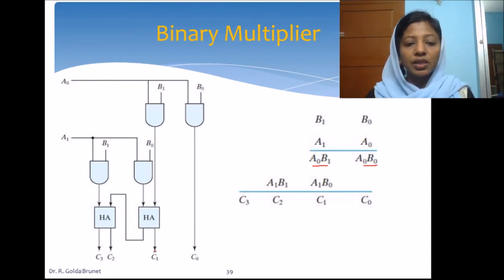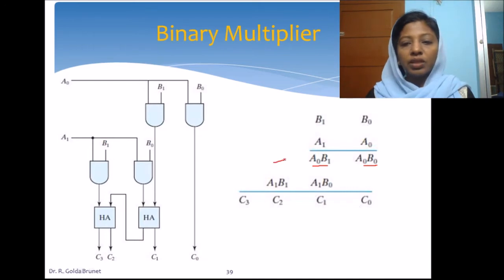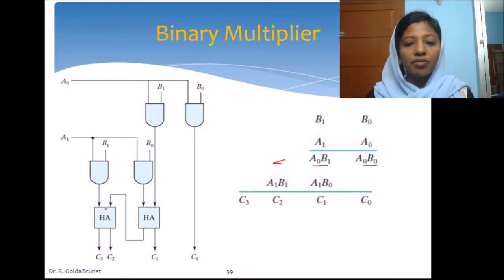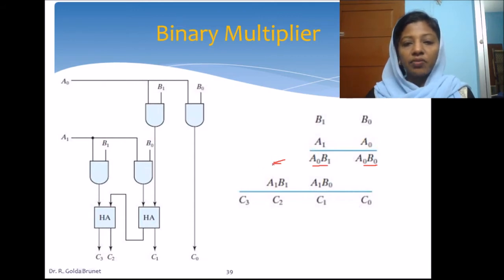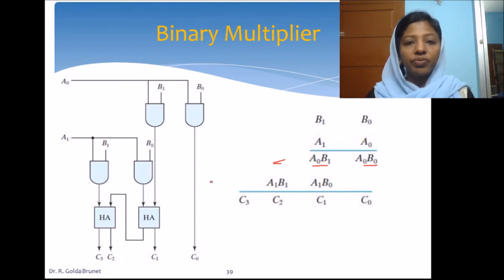The sum appears as the output and the carry of this half adder has to be passed on to the next position. We supply the carry of the half adder to the next half adder, and this will add the bit A1 B1 with the carry of the previous addition. Again we have only two bits to add, so we can use another half adder to generate the sum and the carry, and this is how we realize the multiplier.